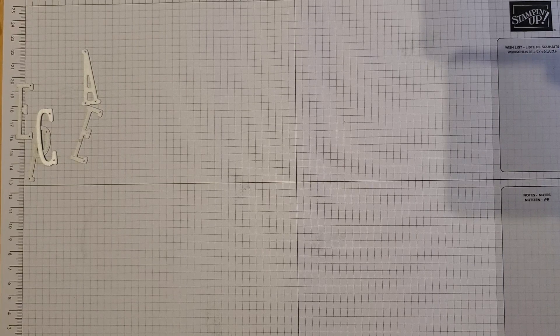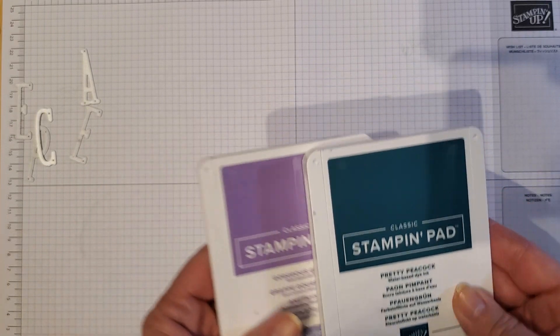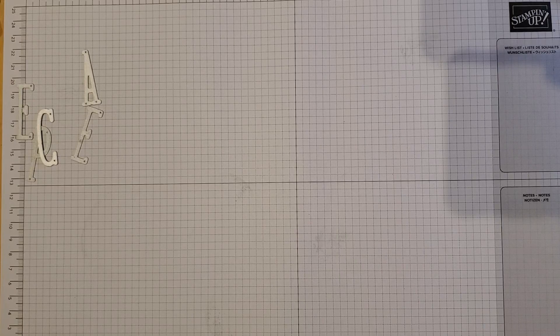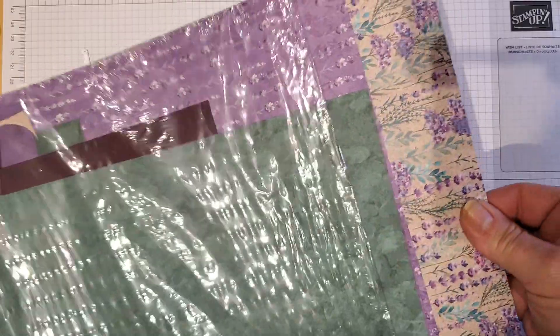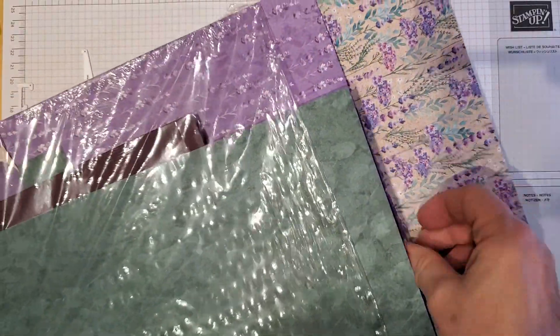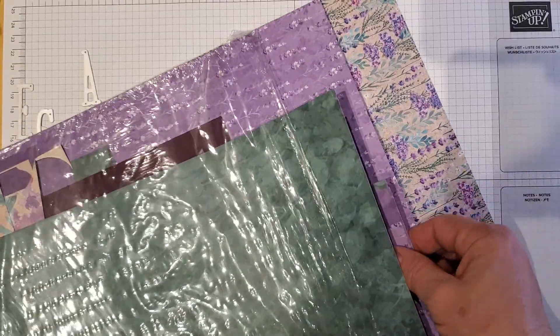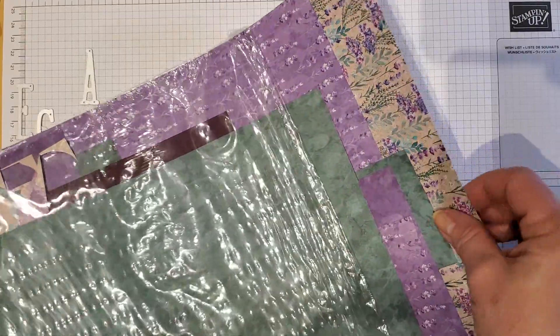I will be using Gorgeous Grape and Pretty Peacock ink pads. And then I will be using Perennial Lavender Designer Series Paper, and this is in the annual catalog also. Look how pretty this is. I know there's lots of new online exclusive things that just came out today, depending on when you're watching this video. But don't forget, there are beautiful products in the annual catalog also. So that one is called Perennial Lavender.